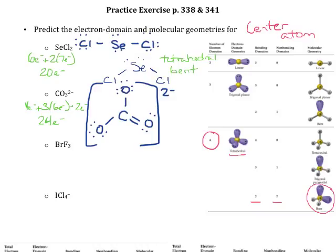Next, we figure out the electron domain and molecular geometry for CO₃²⁻. The central carbon atom has only 3 electron domains — even though there is a double bond, it only counts as one domain because it points in one direction. All 3 domains are bonding with zero non-bonding domains. So both the electron domain geometry and the molecular geometry are trigonal planar. When there are no lone pairs on the central atom, the two geometries are the same.